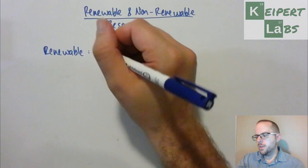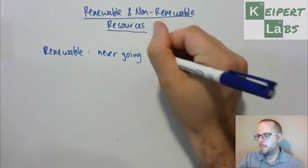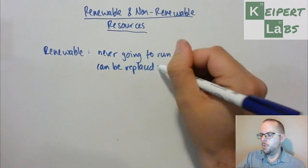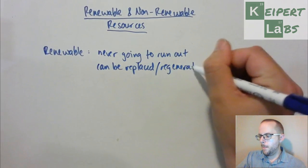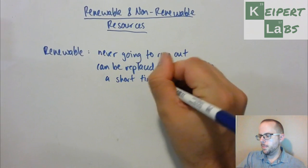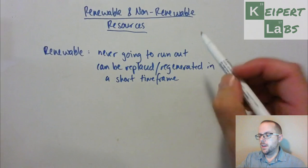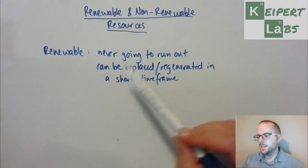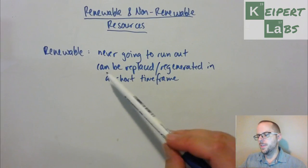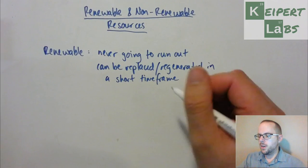Essentially, something that is renewable is never going to run out, or can be replaced — or maybe we could say regenerated — in a short timeframe. This idea that it's never going to run out, or that when we use it, it's able to be replaced or regenerated in a short or practical timeframe.